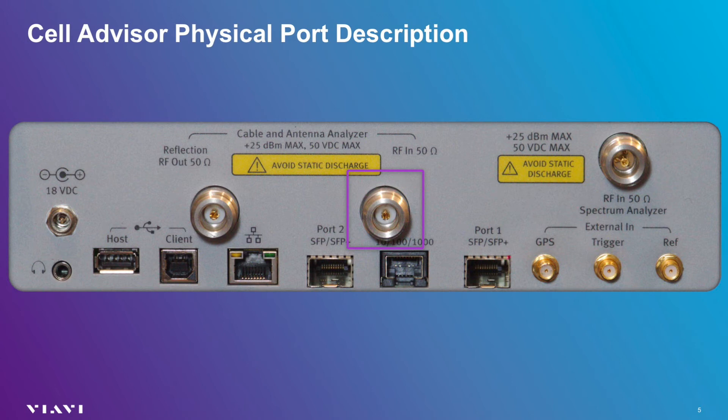When testing devices with extremely high gain, like a bidirectional amplifier with gain exceeding 60 dB, you can use the RF spectrum analyzer port in place of the antenna analyzer input port. Using the antenna analyzer input port to terminate a device under test will allow you to make vector measurements, which include amplitude and phase. If you are using the RF spectrum analyzer port to terminate a two-port measurement, you will only be able to measure amplitude. This is referred to as a scalar measurement.